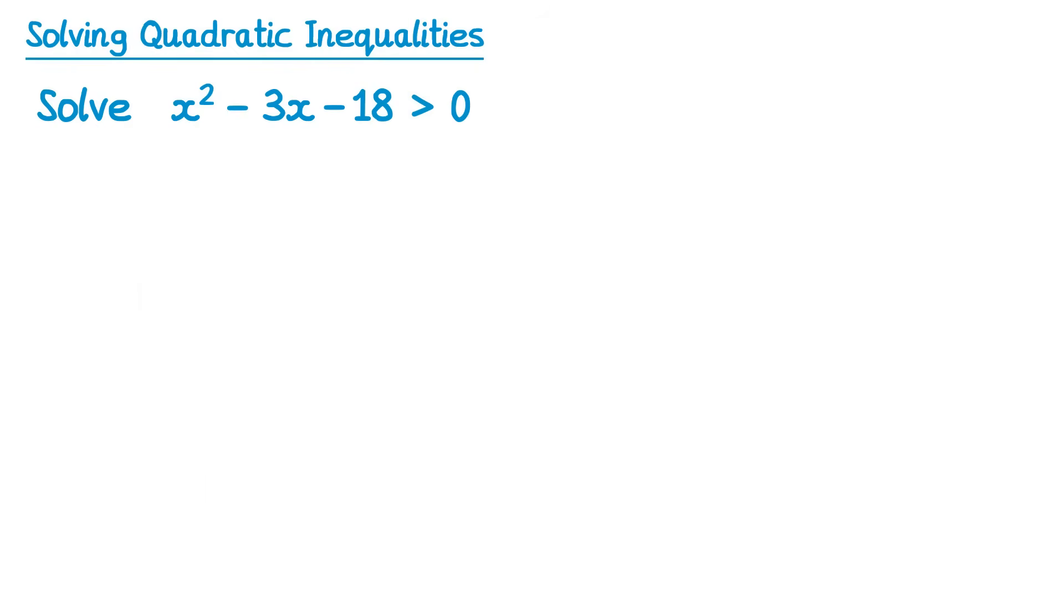For this example, we have a greater than sign, but we'll still begin in the same way. We'll solve the equation instead. To solve this equation, we can factorise. The brackets this time would be x plus 3 and x minus 6, which gives solutions x equals negative 3 and x equals 6. Remember, these are our critical values.